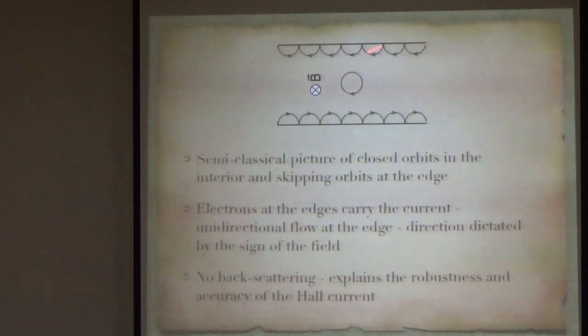Because these are forced to go in these kinds of orbits, at this lower edge it will go this way, and at the upper edge it is forced to go this way. These are called skipping orbits.